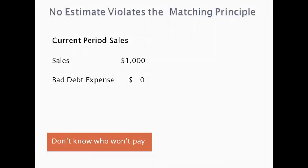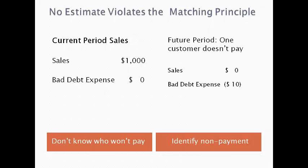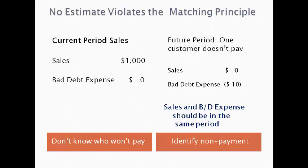The sale is recorded in the period the goods are delivered to the customer. At this point, the company does not know who won't pay and who will pay. In a future period, one customer doesn't pay and there is bad debt expense. If the company waits to record the bad debt expense when the customer doesn't pay, the sale is reported in a different period than the related expense. This violates the matching principle.